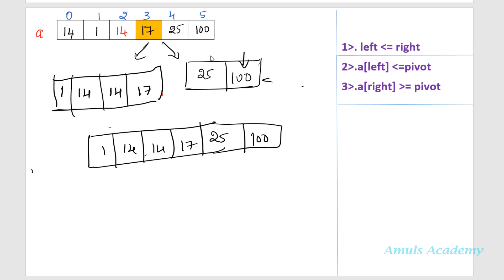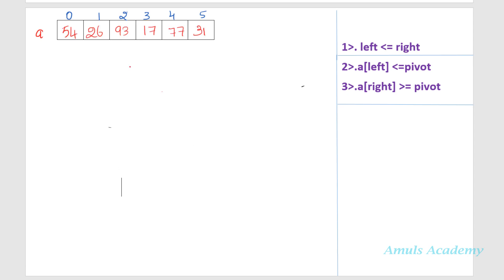In the previous example we took the last element as the pivot element and arranged numbers in ascending order. Today we will take the first element as the pivot element and arrange numbers in ascending order. So here the first element is the pivot value. The right variable will point towards the last value of the list. In the previous example when we took the last value as pivot, left was the first element and right was last minus one. But here since pivot is the first value, we take the next value as left and the last value as right.